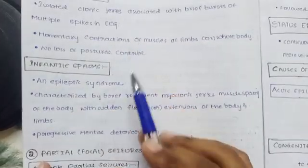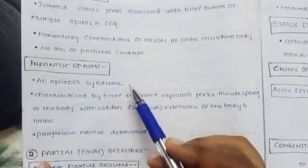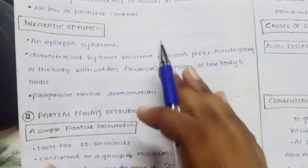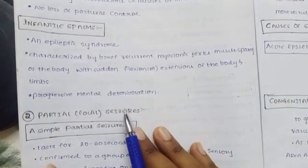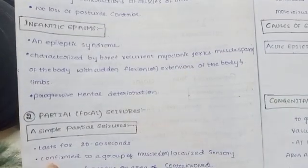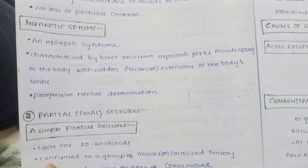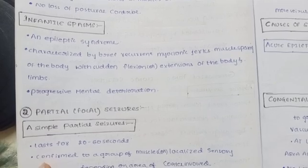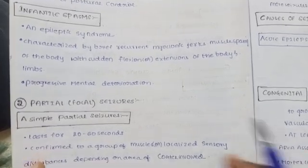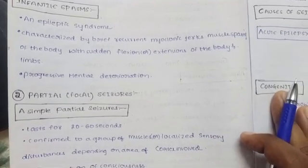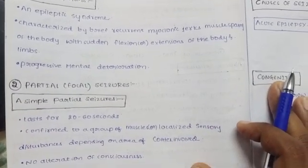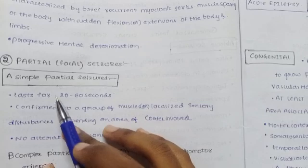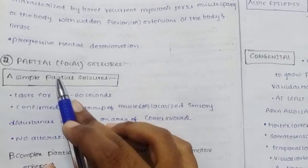Myoclonic seizures are an epileptic syndrome characterized by brief recurrent myoclonic jerks — muscle spasms of the body with sudden flexion or extension of the body or limbs. Hands and limbs show sudden heavy jerks. This is similar to myoclonic seizures but more intense, and may involve progressive mental deterioration.